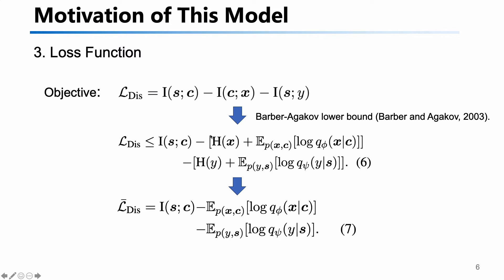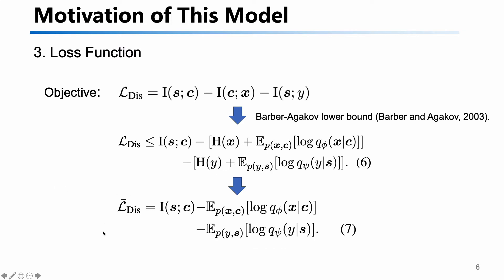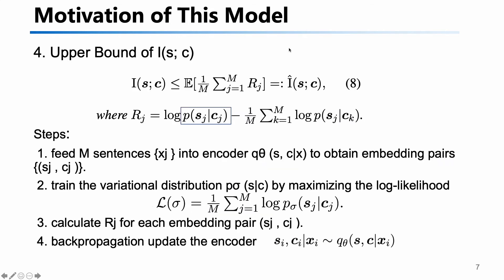For the dataset, the entropy of x and the entropy of y are constant, so the upper bound of the loss becomes this. There is still one item we do not know — the mutual information between s and c. Because this term is positive, we cannot use the lower bound again. The contribution of this paper is that they define the upper bound of mutual information between s and c.